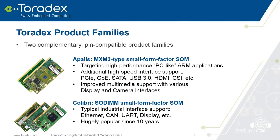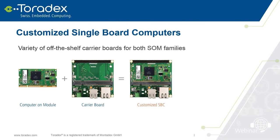We also have the Colibri modules. We have had them for about 10 years and they're a little bit smaller, with lower-end SOCs. You can get a Colibri module starting at 24 US dollars, and that includes everything — flash, memory, RAM, Ethernet, all the connectivity. We also have customizable single board computers with off-the-shelf carrier boards, so you can plug in any of our modules. You can scale performance — going up to an iMX6 quad core, or down to a Vybrid A5 at 400 MHz.